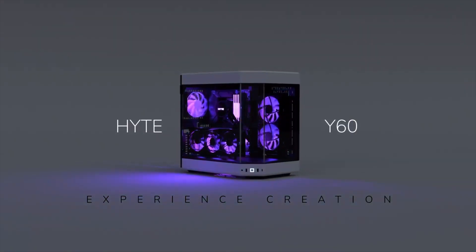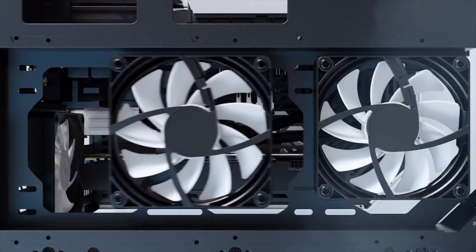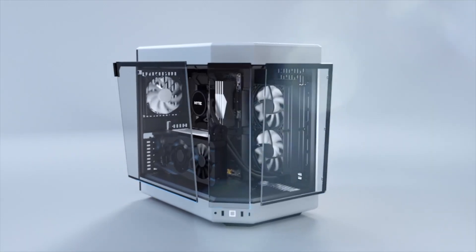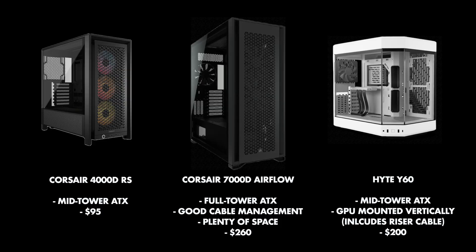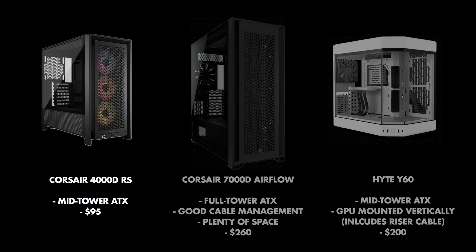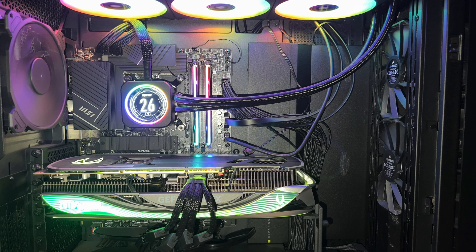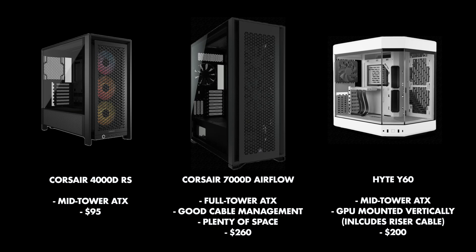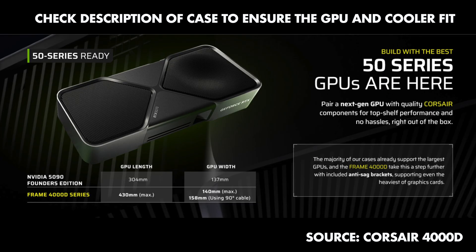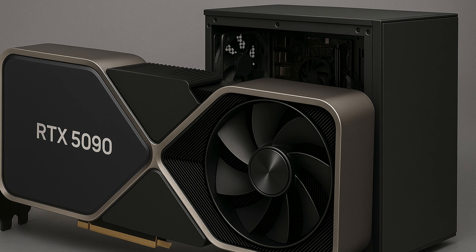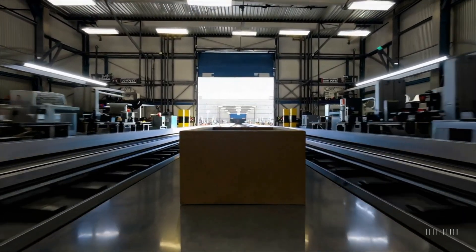The final part we'll look at is the PC case, which is mostly a matter of personal taste. The Hyte Y60 seems very popular at the moment — it has a unique look and the GPU can only be mounted vertically. If you like something more traditional, you could get the Corsair 4000D or the 7000D if you prefer plenty of space — that's the one I have, and there's plenty of room even with a huge GPU. Before buying a case, always check that your GPU and CPU cooler will fit.